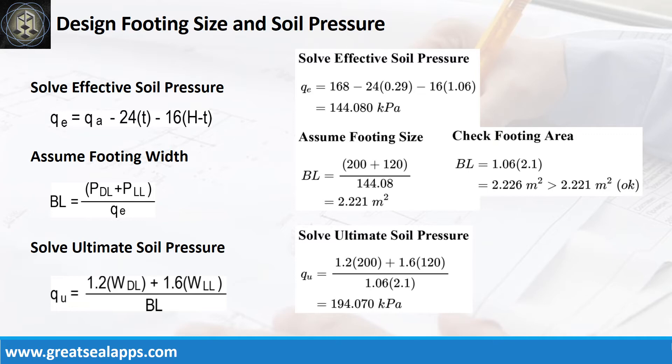Given allowable soil pressure equals 168kPa, depth from natural grade line equals 1350mm and assumed footing depth equals 290mm, the effective soil pressure is 144.08kPa. Given actual dead load equals 200kN and actual live load equals 120kN, the footing width is 1.06m and footing length is 2.1m.